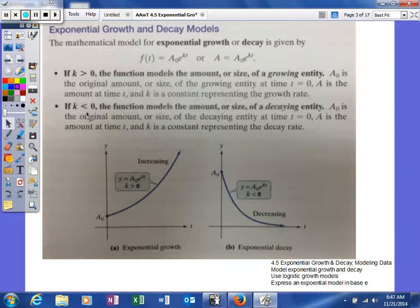However, if your growth rate is less than 0, or basically negative, the function models decay. A₀ is the original amount of the decaying entity at time t equals 0, and A is the amount at time t. k is the constant representing the decay rate.